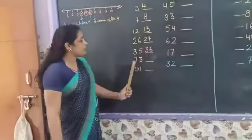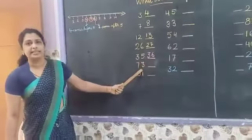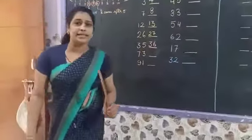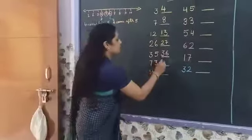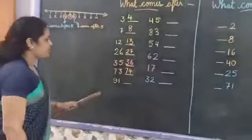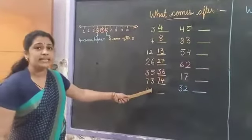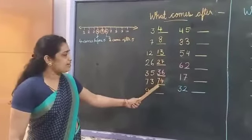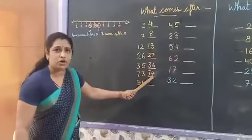And next number is 73. What comes after 73? 7, 4 — that is 74. So 73 after is 74. Have you got it?